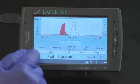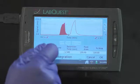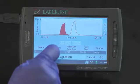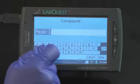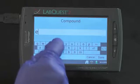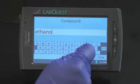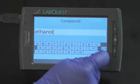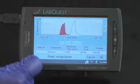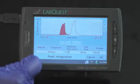Enter the name of the compound if known. Tap twice on peak one and type in ethanol. Choose Done. Repeat these steps until all peaks have been analyzed.